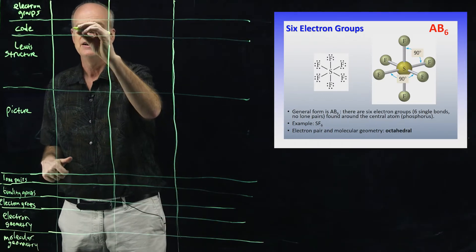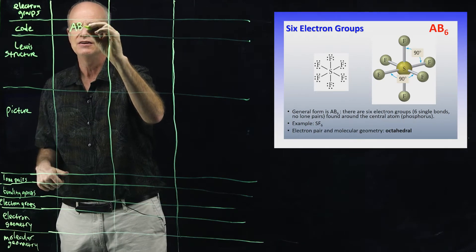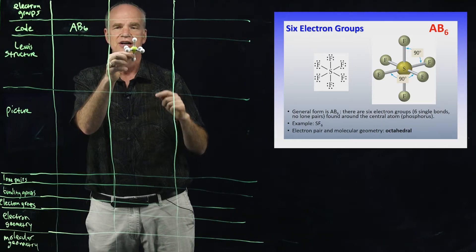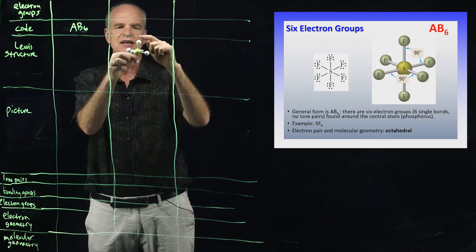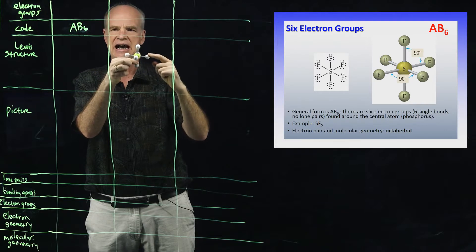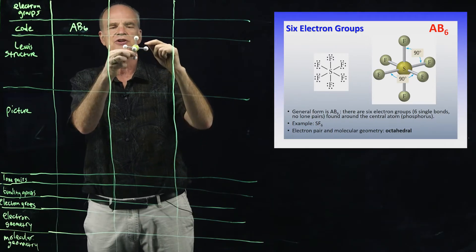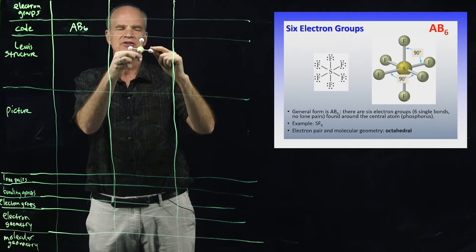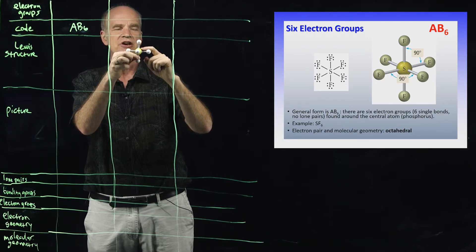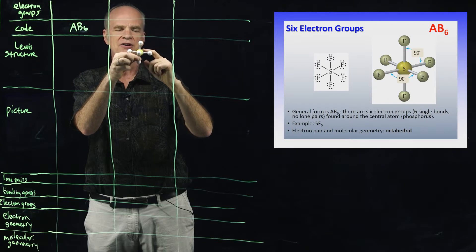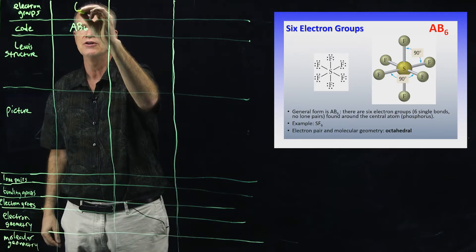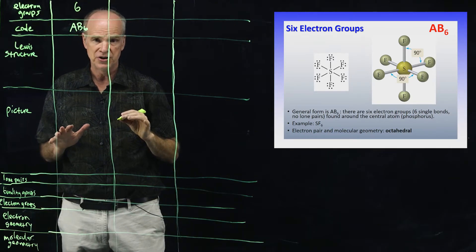The first one we're going to look at has a code of AB6. A is the central atom, and there are six atoms of another element, B, attached to it in different positions in space. Each of these atoms is attached by a single bond, which counts as a bonding group. The central atom doesn't have any lone pairs — six single bonds, six total electron groups.